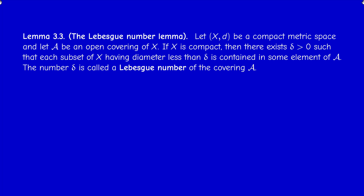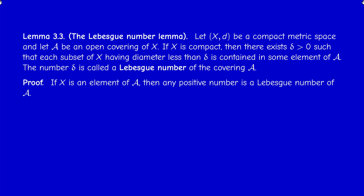The number is not unique — any smaller number would also work. We distinguish two cases. If the whole space X is an element of the covering, then any positive number works, since any subset of X is contained in X. So we assume that X itself is not an element of the covering.